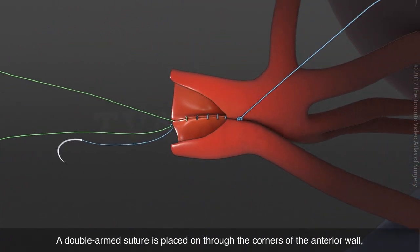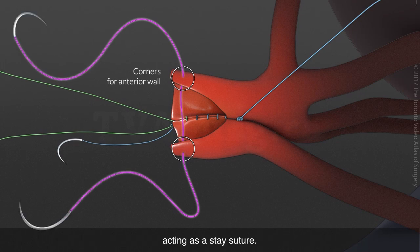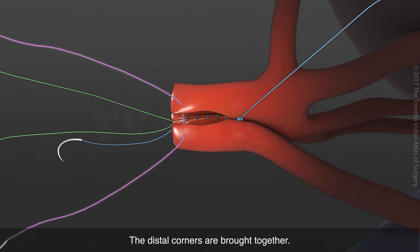A double-armed suture is placed through the corners of the anterior wall, acting as a stay suture. The distal corners are brought together.